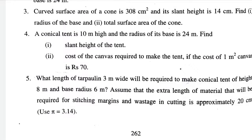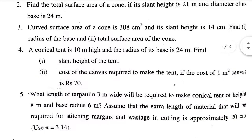Question number 4: a conical tent is 10 meter high — that means simple height is given, not slant height — and the radius of the base is 24 meter. Find: first, the slant height. Even if slant height is not asked, our first task is to find slant height whenever we need total surface area or curved surface area. The formula for slant height: L² = R² + H². R is given and H is given, so we find slant height from there.